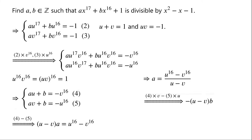Subtracting u times equation 5 from v times equation 4, we have negative u minus v times b equals u to the power of 17 minus v to the power of 17. Dividing the equation by negative u minus v, we have b equals negative u to the power of 17 minus v to the power of 17 over u minus v.